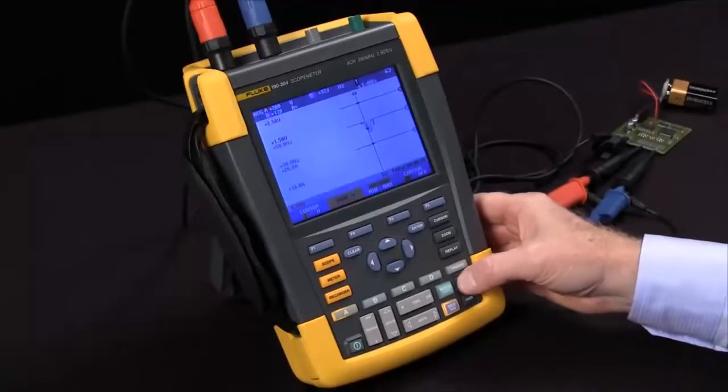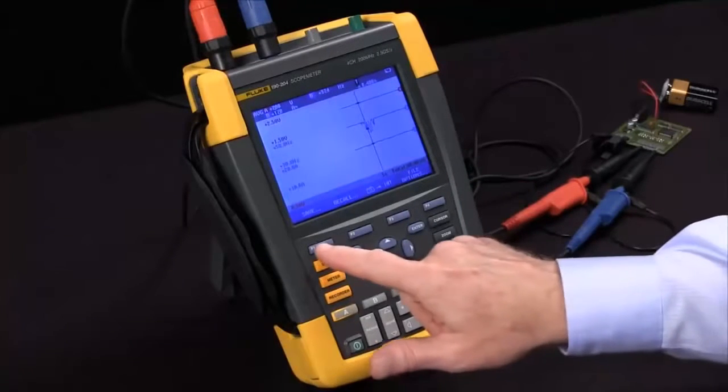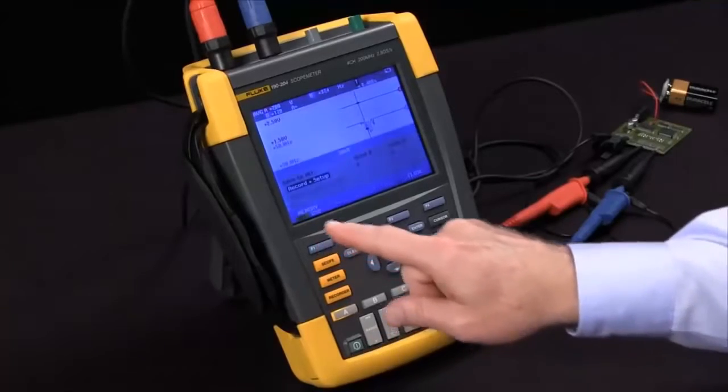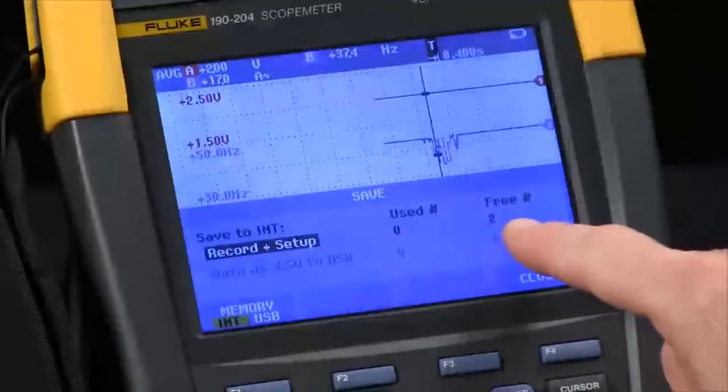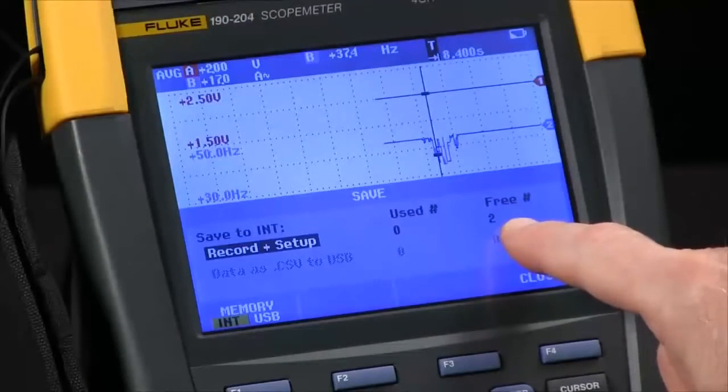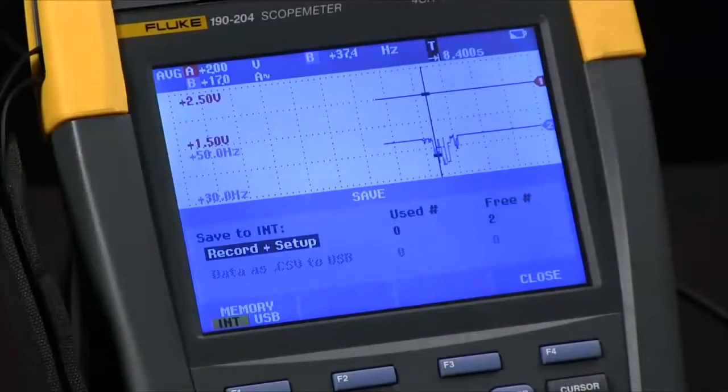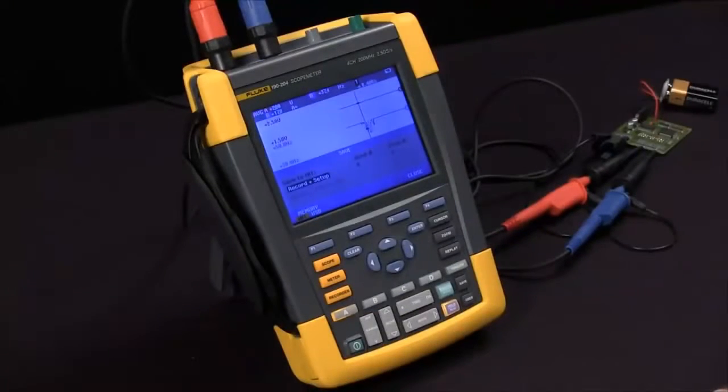If I want to save, I hit the Save button, F1 to save, and I can record and save up to two recordings and setups for TrendPlot. And that's how you use the ScopeMeter TrendPlot function.